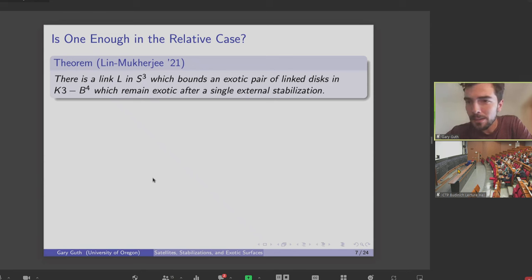But the sort of positive evidence is countered by negative evidence in the relative case. So last year, there is this paper of Lin-Mukherjee where they found a link in S3, which bounds an exotic pair of linked disks in a punctured K3 surface. And they show that this link actually remains exotic after a single external stabilization. So you can take a connected sum with S2 cross S2, and this link pair will remain exotic.